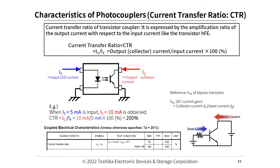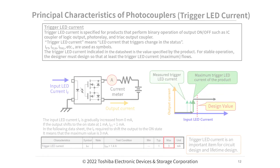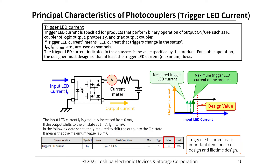Characteristics of photocouplers — Current Transfer Ratio (CTR). The current transfer ratio of a transistor coupler is expressed as the amplification ratio of the output current with respect to the input current, similar to transistor HFE. For products that perform binary output on/off operation — such as IC coupler logic output, photorelay, and TRIAC output coupler — trigger LED current is specified. Trigger LED current is the LED current that triggers a change in status, using symbols IFT, IFLH, IFHL, etc. The trigger LED current in the datasheet is the product-specified value; for stable operation, the designer must ensure at least the maximum trigger LED current flows.